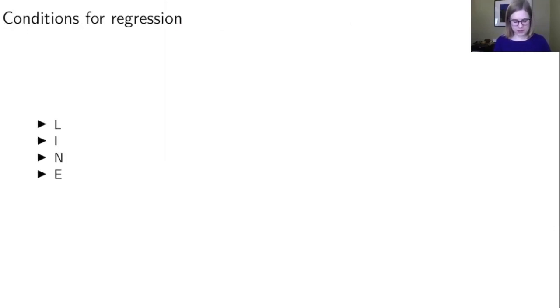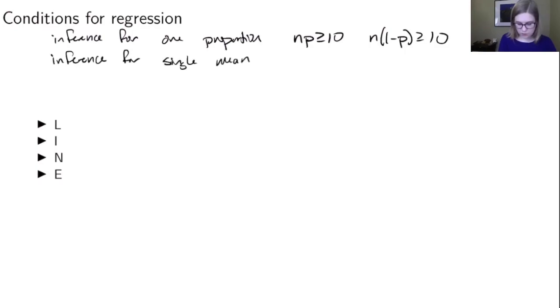All right, the last piece of this is that if you're going to do regression and you're going to do inference about it, you need some conditions. So when we were doing inference for one proportion, we were checking the conditions NP greater than 10 and N times 1 minus P greater than 10. And when we did inference for a single mean, we were checking N greater than or equal to 30. So when you do inference for regression, there are four conditions and they're more complicated. We're not going to talk in super detail about all of these in this class. If you want to learn more about this stuff, you could take a full class on regression like stat 320.